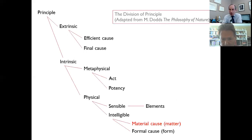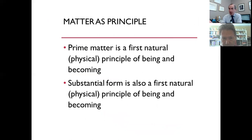So essentially, in the last lecture, this lecture, and the next couple of lectures, we're just focusing on this first principle of being pertaining to the physical world — not necessarily pertaining to the entirety of whatever is. Prime matter is a first natural physical principle of being and becoming. And substantial form is also a first natural physical principle of being and becoming. That's it for this lesson. Next lesson I'm going to dig a little deeper into the properties of prime matter for the next two lessons. Any questions? No questions. All right, let me stop and we'll come back.